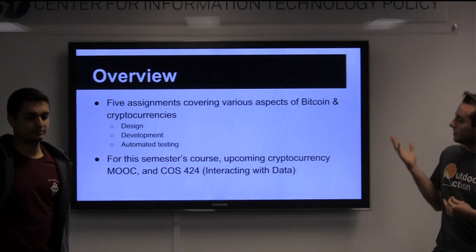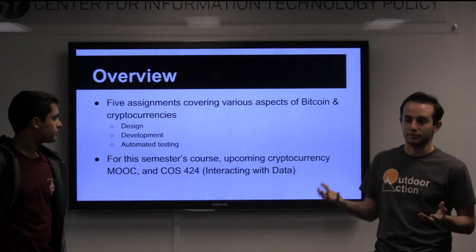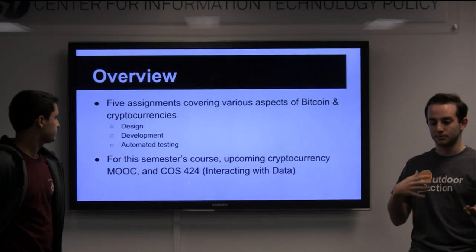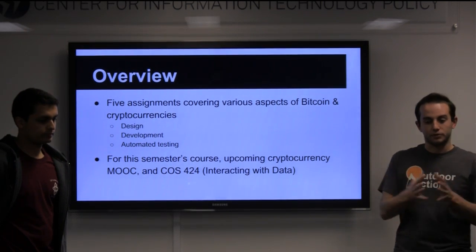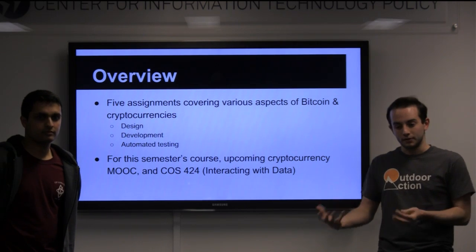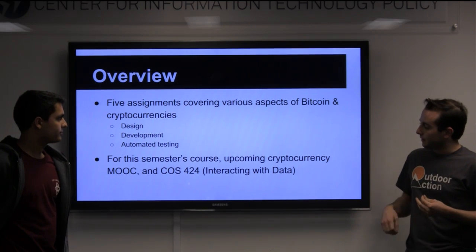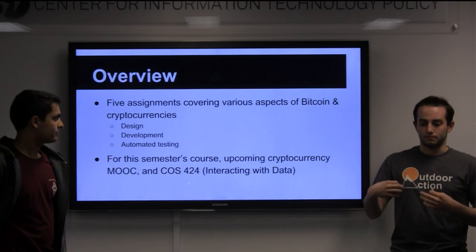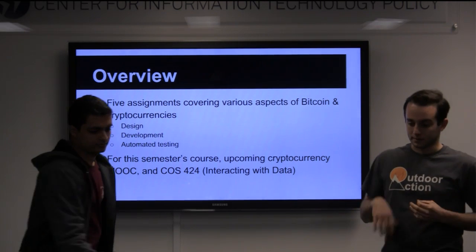Our goal was to develop five assignments covering various aspects of Bitcoin and cryptocurrencies in general. For instance, the second assignment covers a consensus protocol that's more similar to Ripple than to Bitcoin. We had to design each of them, come up with the modules we wanted to make, figure out where to draw the boundary between what we would provide and what the students would implement. We developed them all in Java, and also developed automated testing code in Java so that when submissions are entered into Dropbox, you can click a button and see some tests run against your code to get some output.